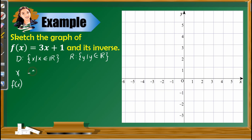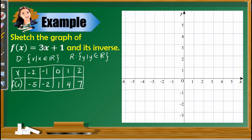Let's use x = −2, −1, 0, 1, and 2. For the f(x) values, substitute each x into the function. For x = −2: 3(−2) + 1 = −5. For x = −1: 3(−1) + 1 = −2. For x = 0: 1. For x = 1: 4. For x = 2: 7. After completing the table of values, let us now plot the points on the Cartesian coordinate plane.